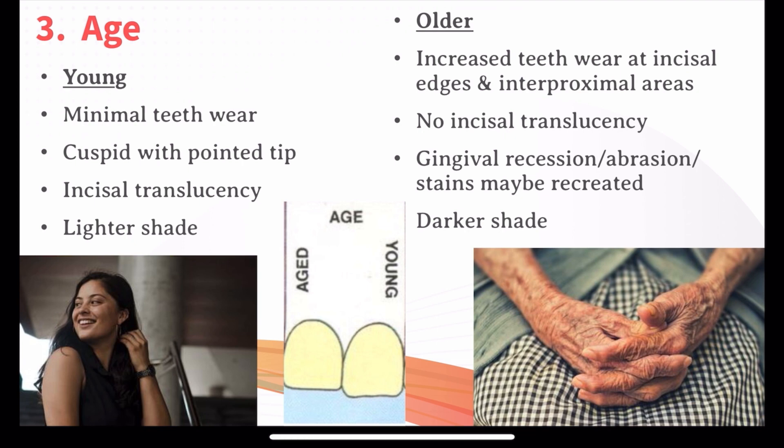The third factor is age of the patient. In case of a young patient, you can give teeth with very minimal wear, and the canines will have a pointed tip with no wearing on the tip. You can give incisal translucency — that is, in the incisors, the incisal edge will be translucent — and you can opt for lighter shades.